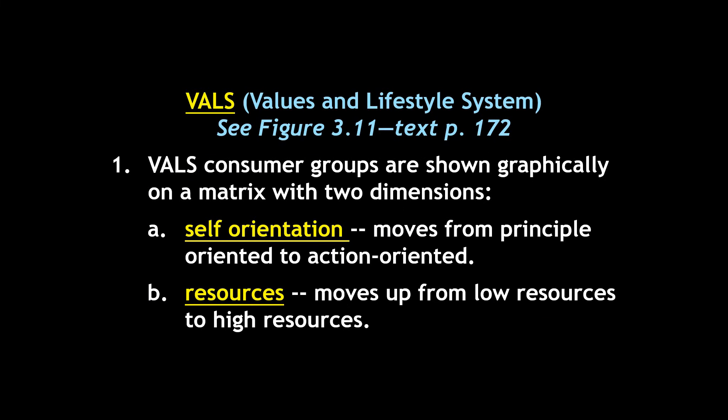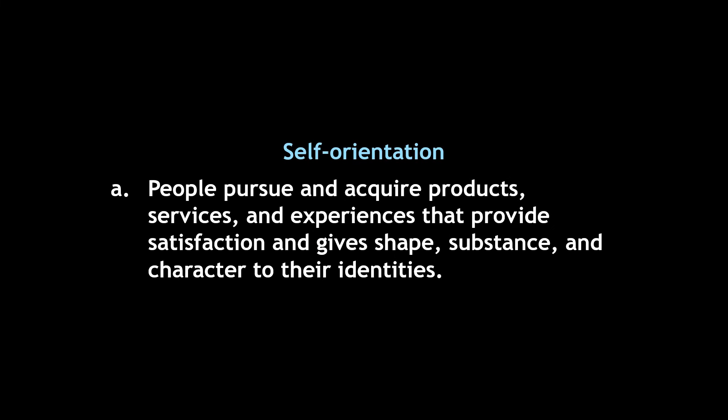VALS — the Values and Lifestyle System. There's a drawing in your textbook that shows this graphically. VALS consumer groups are shown on a matrix with two different dimensions. One dimension is self-orientation, moving from principle-oriented towards action-oriented. The other dimension is resources, moving from low resources to high resources. Self-orientation refers to the idea that people pursue and acquire products, services, and experiences that provide satisfaction and give shape, substance, and character to their identities — the sense that the things you buy and acquire improve your quality of life and shape who you are.